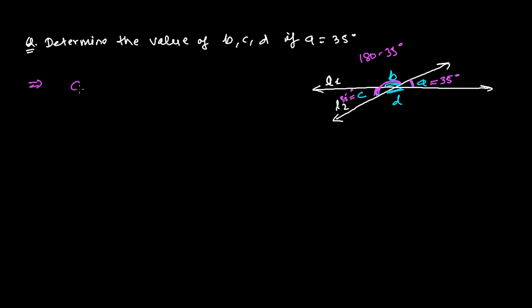Here, first I'm going to write c equals a equals 35 degrees, and the reason is vertically opposite angles are equal. Always you have to give the reason in geometry. If you're not writing the reason after the statement you have written, you are not going to get any marks for that. Vertically opposite angles are always equal.